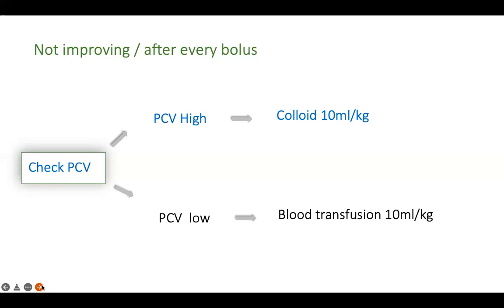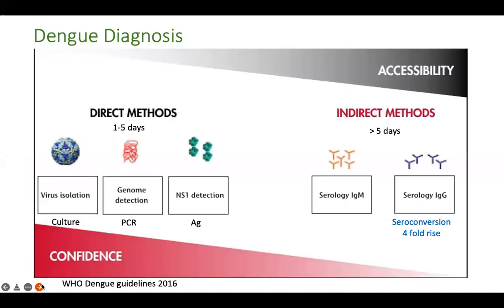Once blood pressure stabilizes, stop fluids as early as possible and allow the patient to diurese naturally. Continuing IV fluids beyond 48 hours risks fluid overload and pulmonary edema during the resorptive phase. In summary: febrile phase — symptomatic management and oral fluids; critical phase — IV fluids based on severity; convalescent phase — stop IV fluids and allow natural recovery.